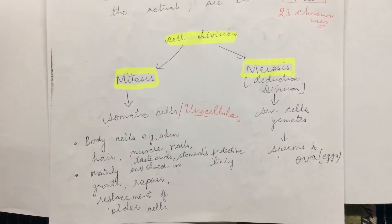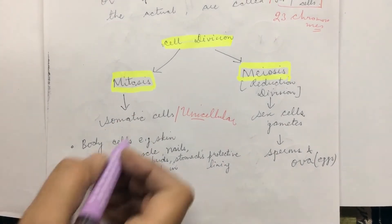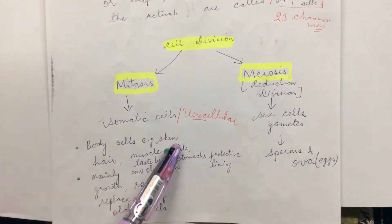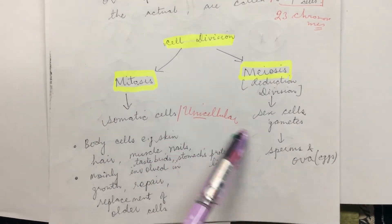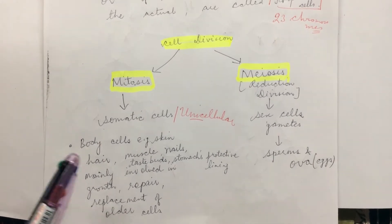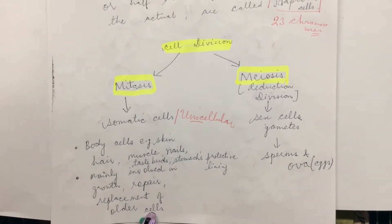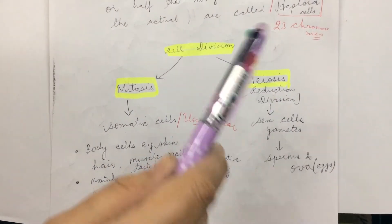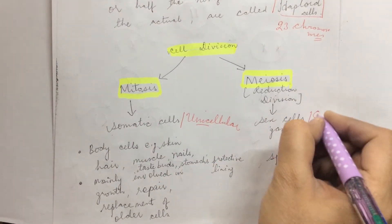Mitosis occurs in somatic cells and unicellular organisms. Somatic cells are all the body cells — for example, skin, hair, muscles, nails, taste buds, and the stomach's protective lining — the cells mainly involved in growth, repair, and replacement of older cells. Meiosis, the reduction division, occurs in sex cells, that is gametes, which are also called germ cells.